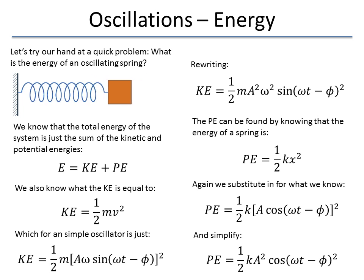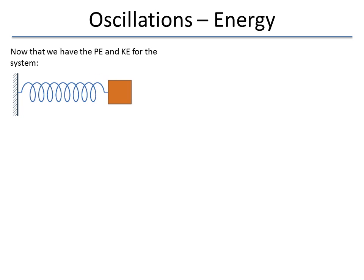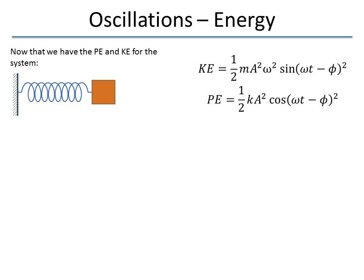There is one thing that we should note. There is a minus sign that got missed over here. But the minus sign gets squared. So negative one squared turns into a positive one. So don't worry about that small little mistake that I'm just noticing. Alright, so we have our potential energy and our kinetic energy for the system. One half m A squared omega squared sine of omega t minus phi squared. And the potential energy is one half k A squared cosine of omega t minus phi quantity squared.